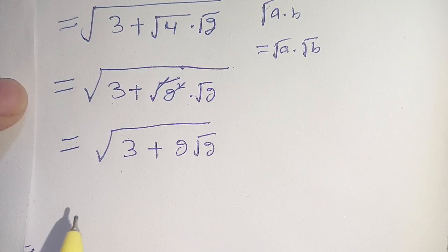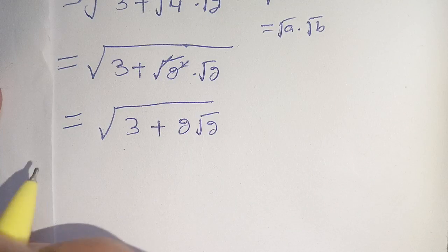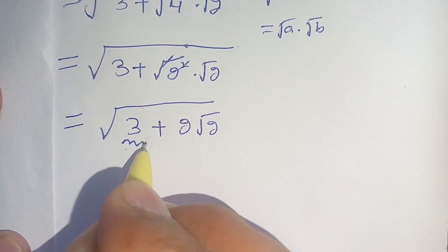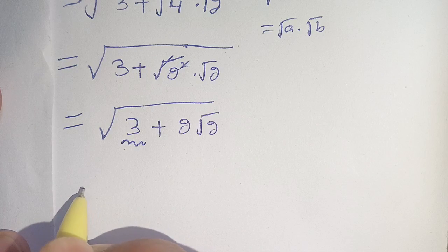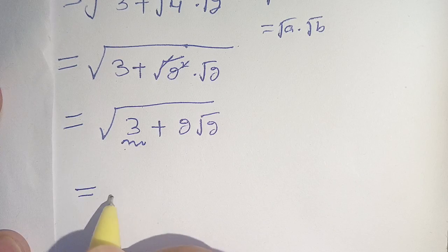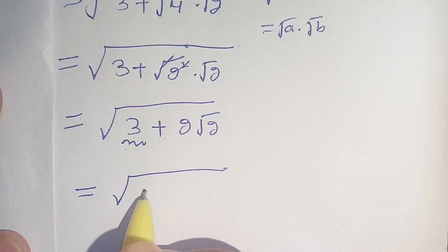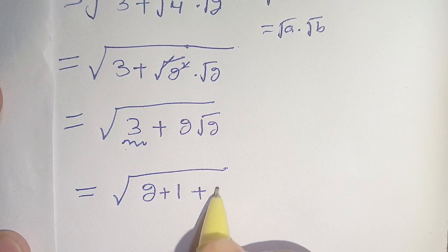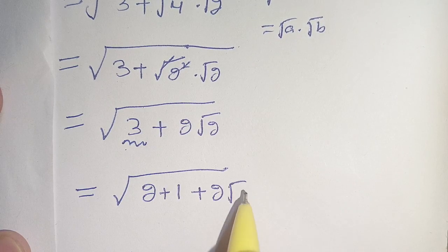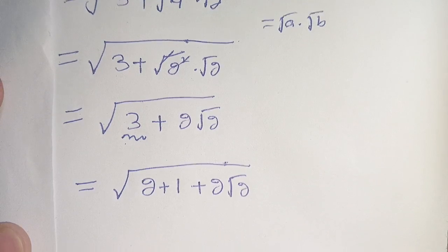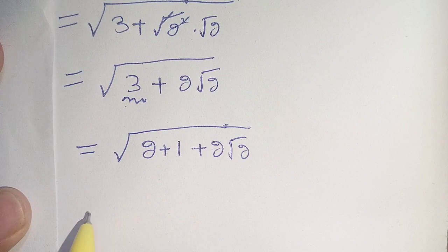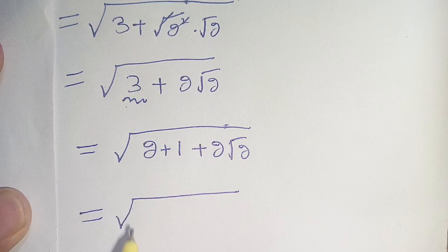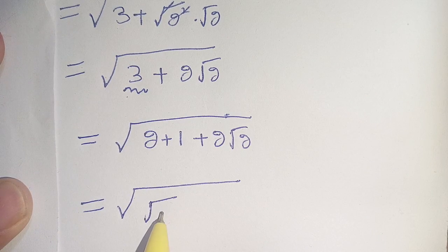In the next step, we can break down 3 in terms of 2. We write this as square root of 2 plus 1 plus 2 square root of 2. Then we can write 2 as square root of 2 power 2.